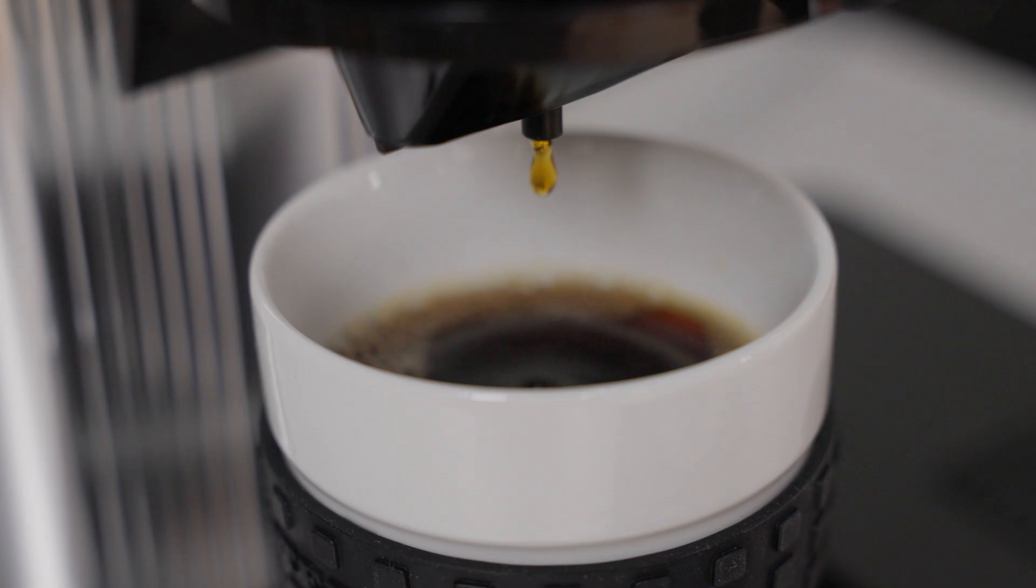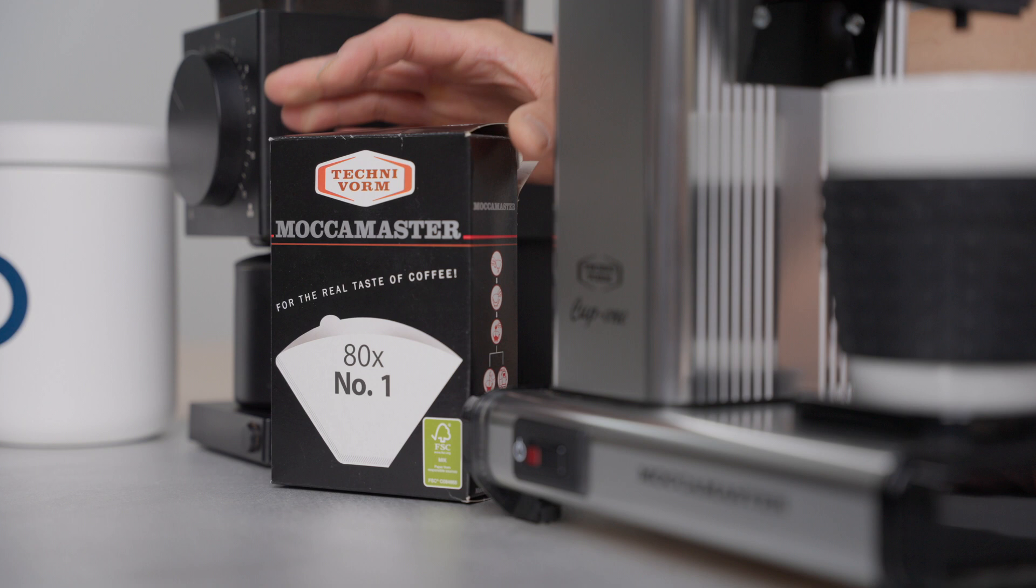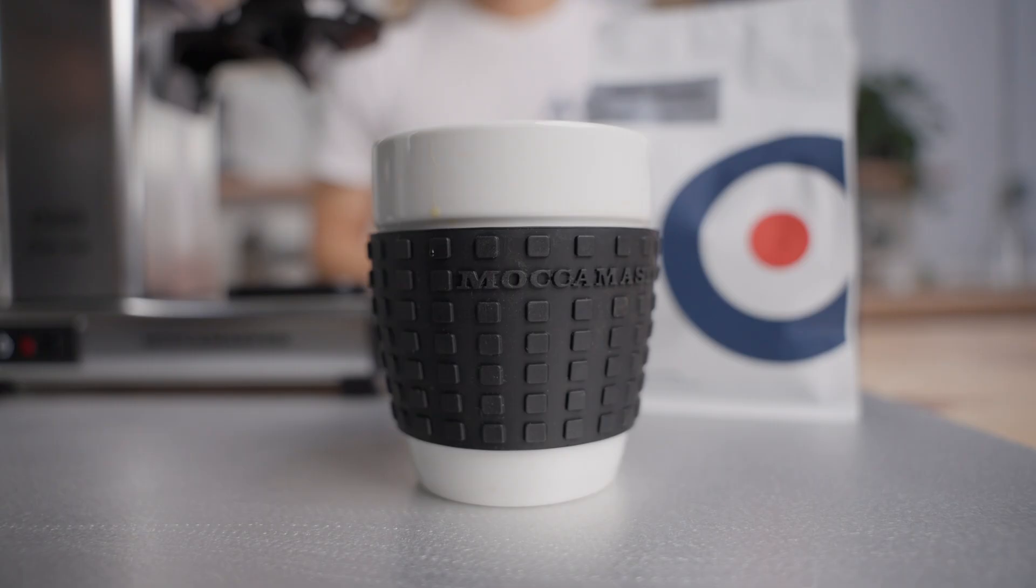Each brewer comes with 3 boxes of number 1 filters, enough for 240 cups. The mug you see in the video comes separately, but we recommend it to complete the look.